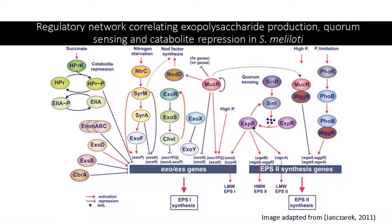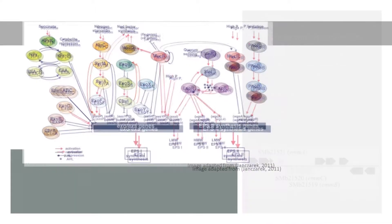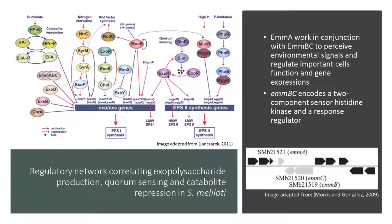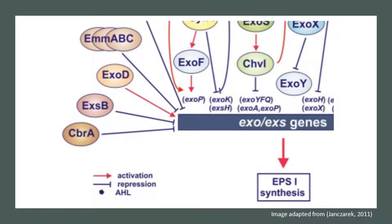Today, we will be focusing on a particular group of proteins called EMMABC. As you can see, here are the genes encoding EMMABC. EMMA works in conjunction with EMMABC to perceive environmental signals and regulate important cell functions and gene expressions. EMMABC encodes a two-component sensor histidine kinase and a response regulator. As you can see in the map, EMMABC represses EXO and EXS genes, which in turn represses EPS1 synthesis.